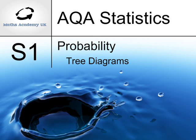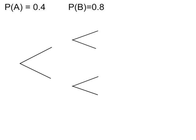Probability tree diagrams. We have two events, A and B, which are independent. Event A goes first, and then event B.